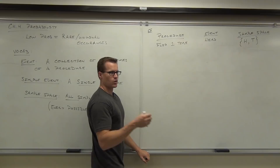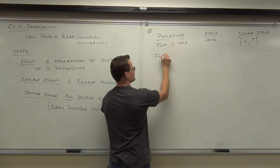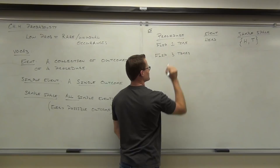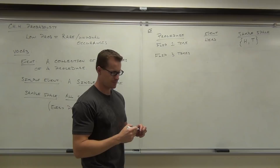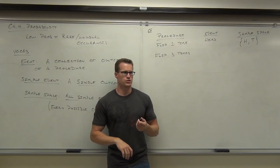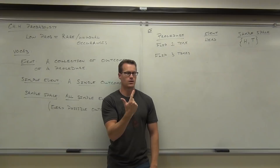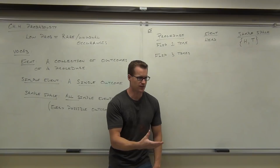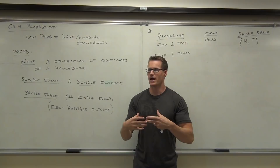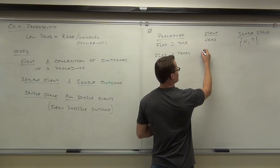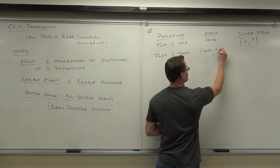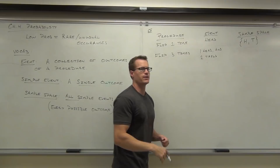Let's do one more example to really illustrate this. The procedure now is we're going to flip a coin three times. If you flip a coin three times, what could you get? You get heads or tails for the first one, then you flip it again, then again. An event says what possible combinations could you have. One event would be: I'm looking for one head and two tails — that's an example of an event.